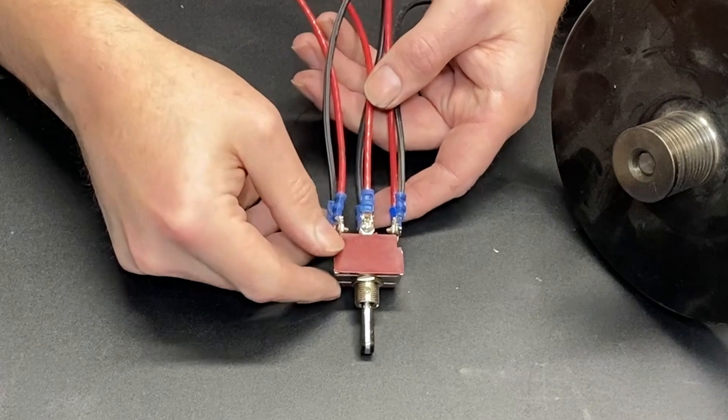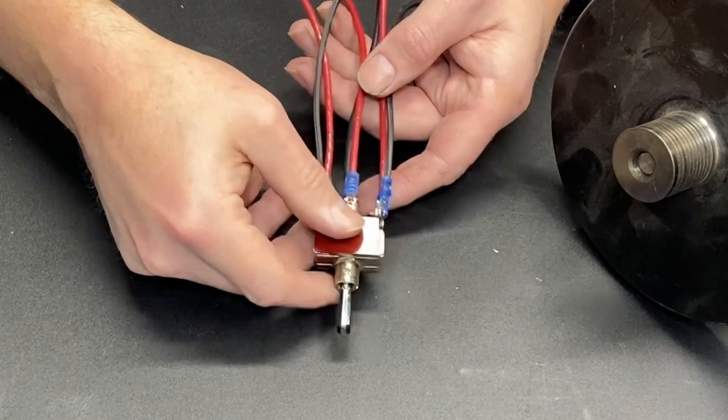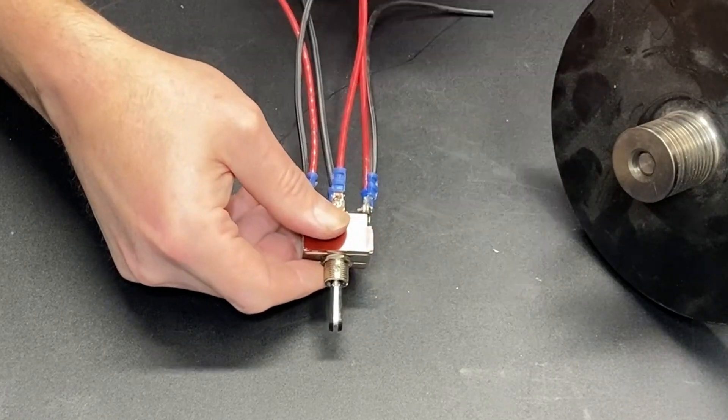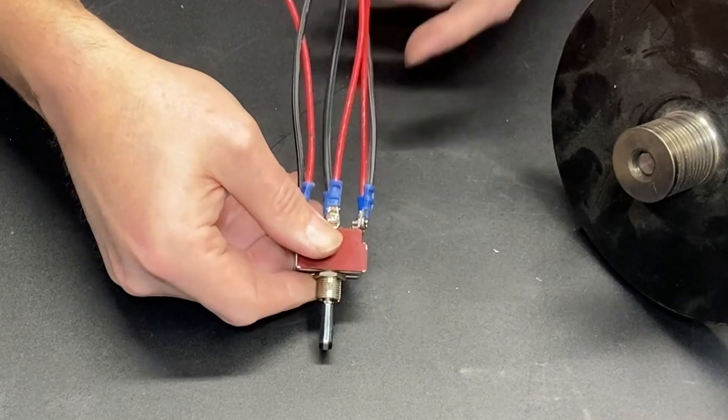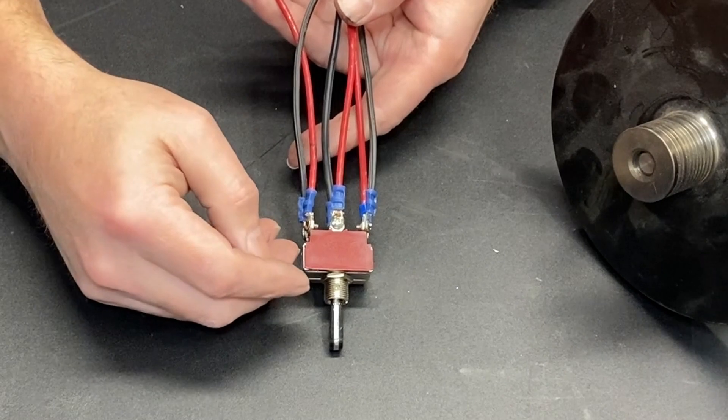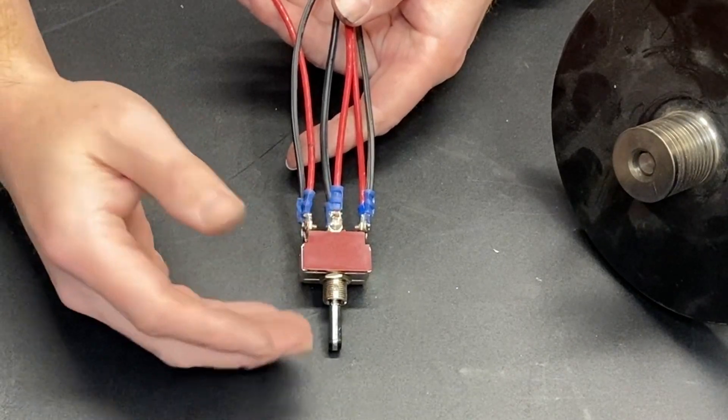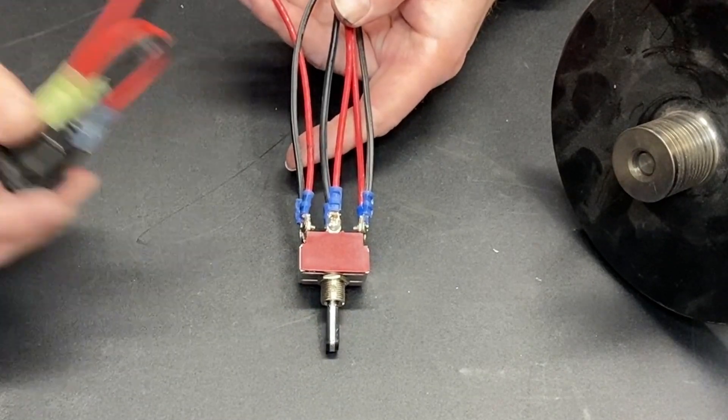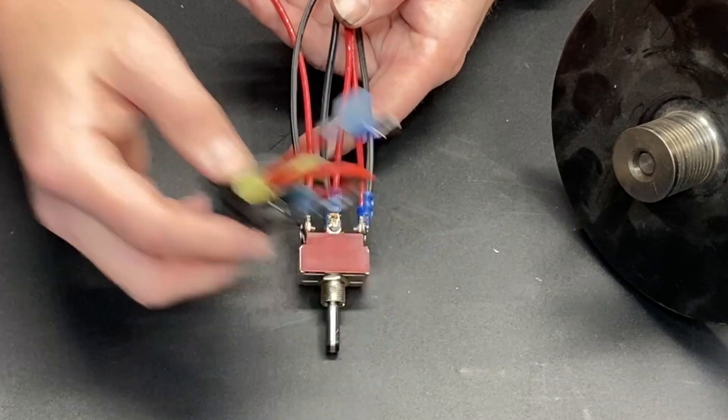These center terminals are the ones that go to our motor. Remember, red is going to go to red, black is going to go to black. I made nice long leads on this just for illustration's sake. When you actually put it in your lathe or other device, you're going to want to clean it up and do something probably similar to this.